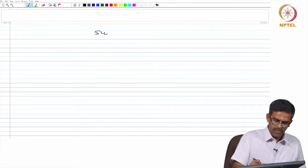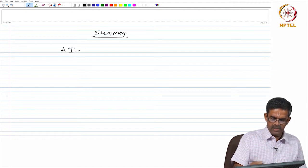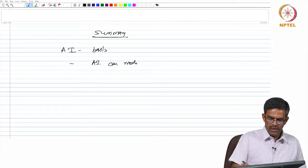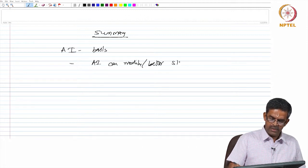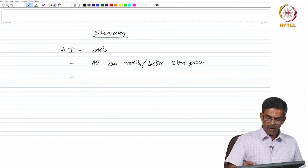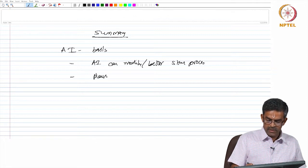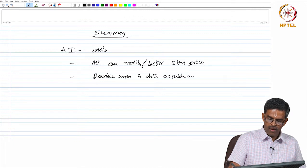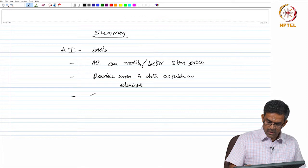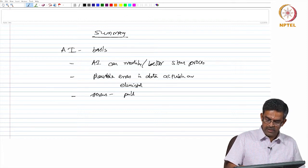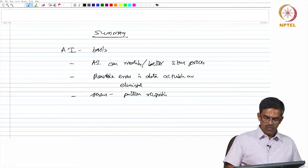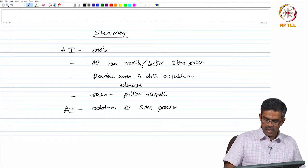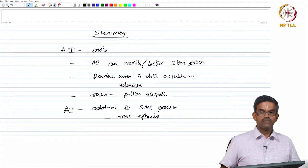In this lecture, we learned basics of artificial intelligence. We also saw how AI can modify and make better the SHM process. We have also seen how the possible errors in data acquisition are eliminated and how sensors can also be used for pattern recognition. We have said that AI is a successful add-on to SHM process to make it more efficient. Thank you very much and bye.